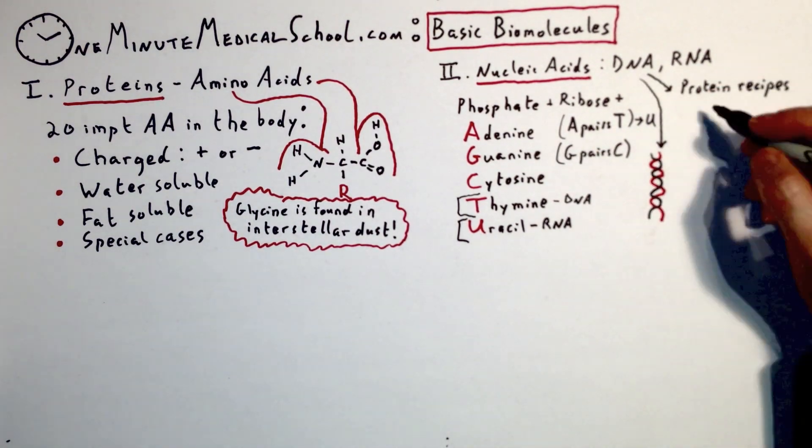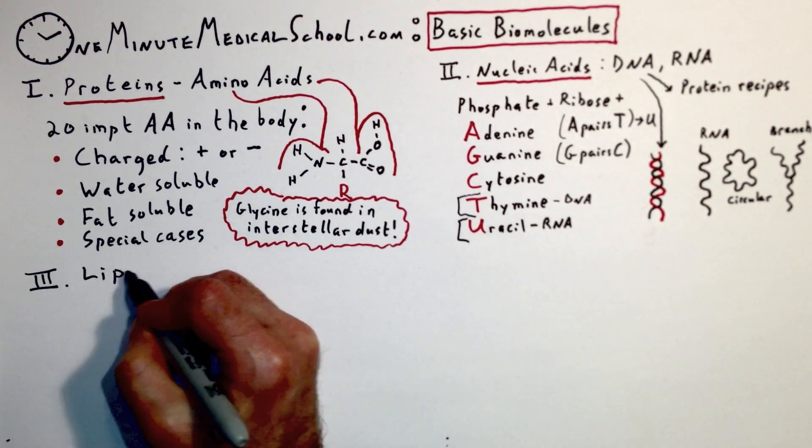DNA's basic structure is in double strands. RNA is in single strands, circles, or branches.